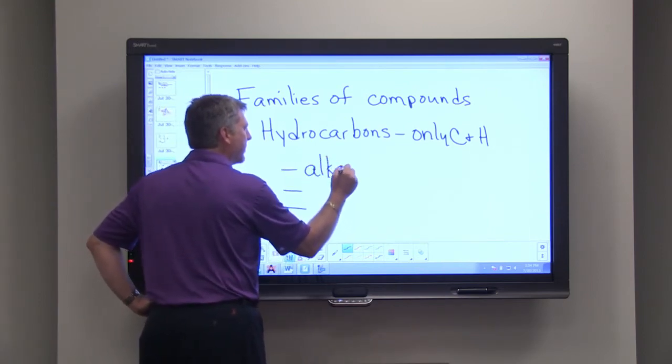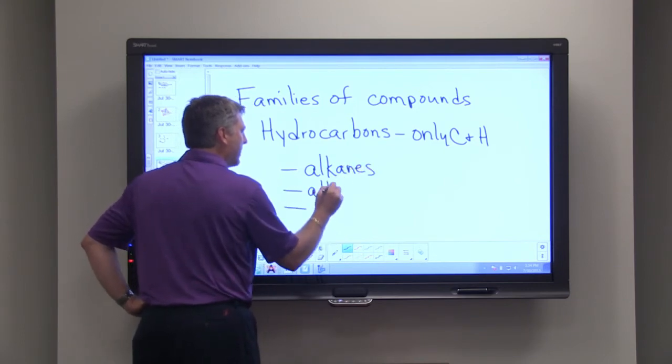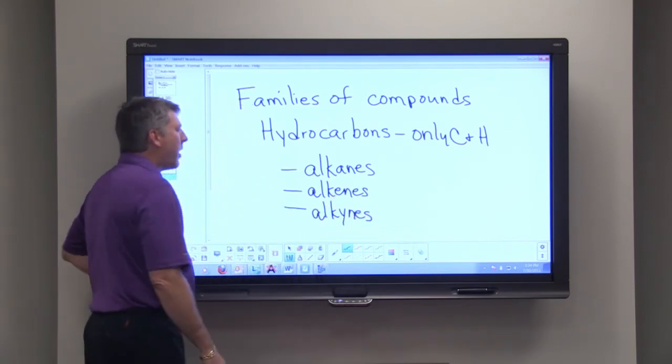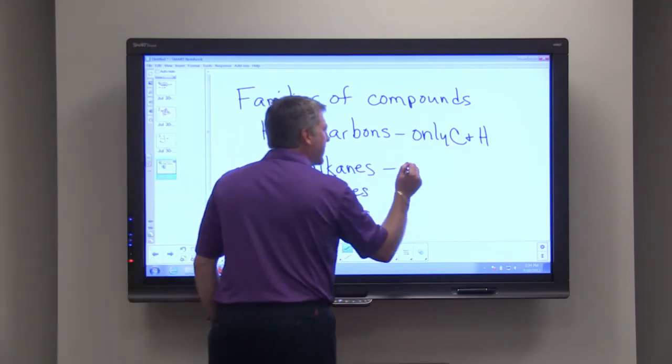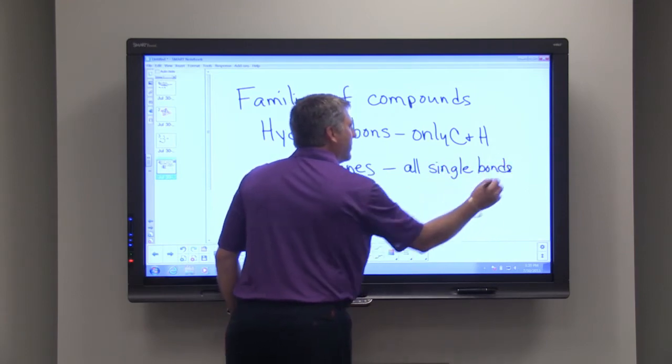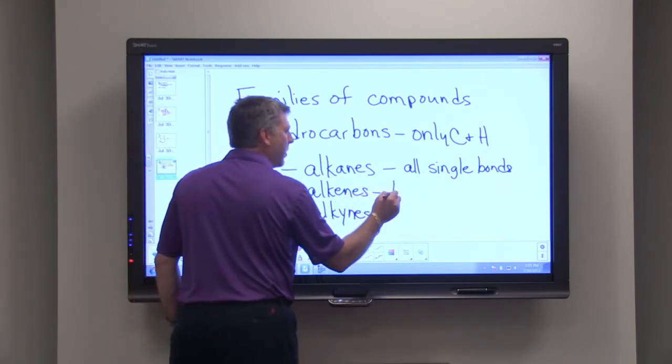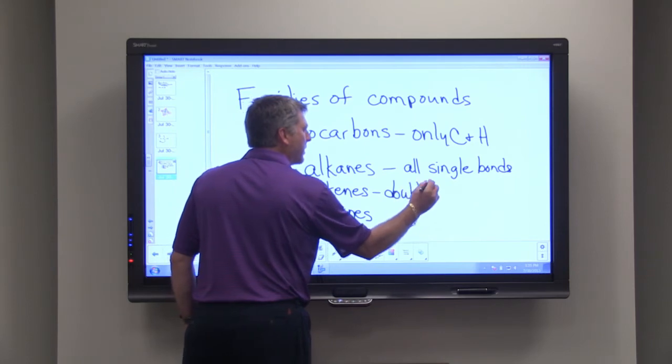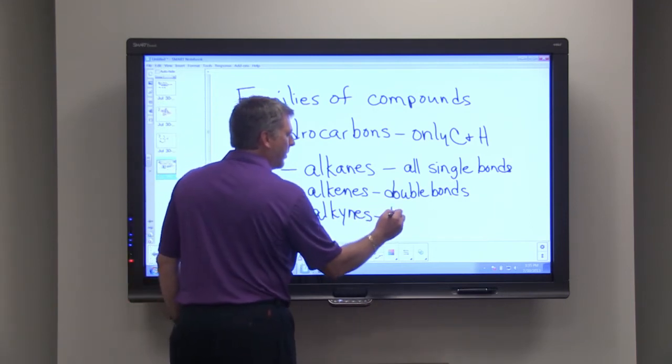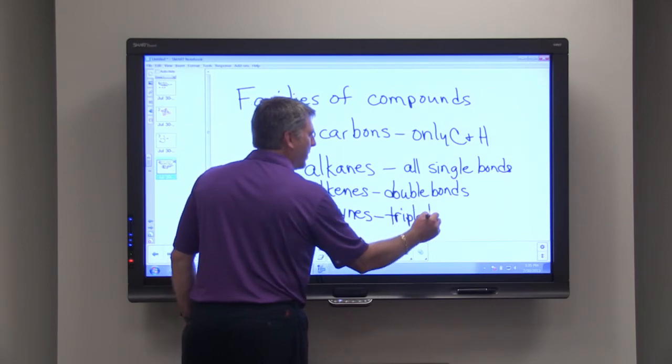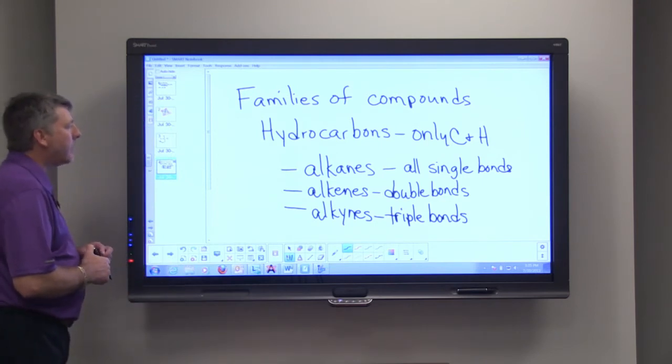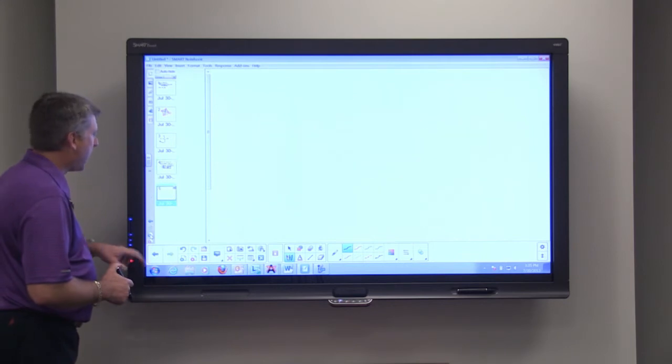There are three families of hydrocarbons: the alkanes, the alkenes, and the alkynes. Now all of these again just contain carbon and hydrogen. The alkanes have all single bonds between the carbons, whereas the alkenes can have one or more double bonds in the chain. So let's look at some of the hydrocarbons and talk about their structure.